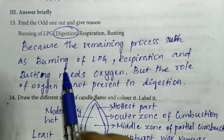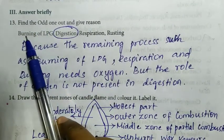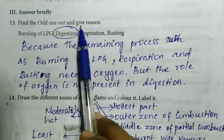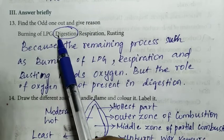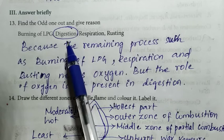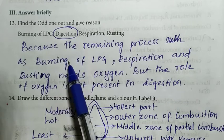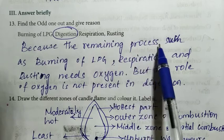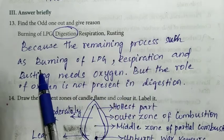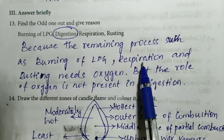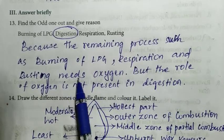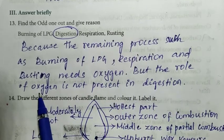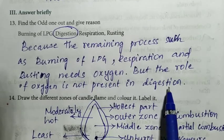Third section: Answer Briefly. Thirteenth question — Find the odd one out and give the reason. The odd one is digestion. The reason is that the remaining processes — burning of LPG, respiration, and rusting — all require oxygen, but oxygen does not play a role in digestion.